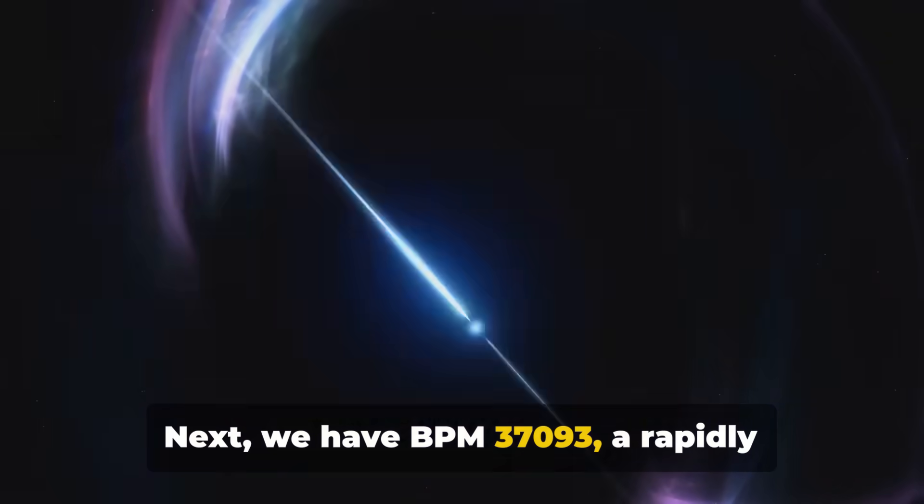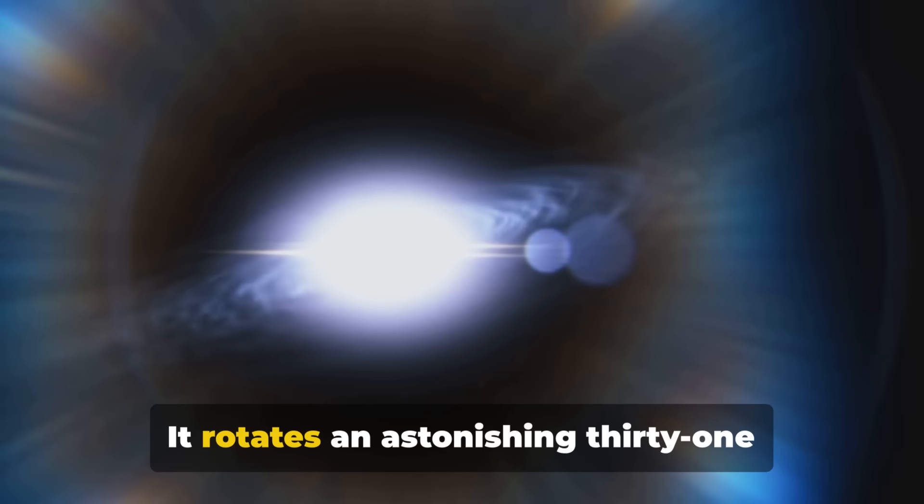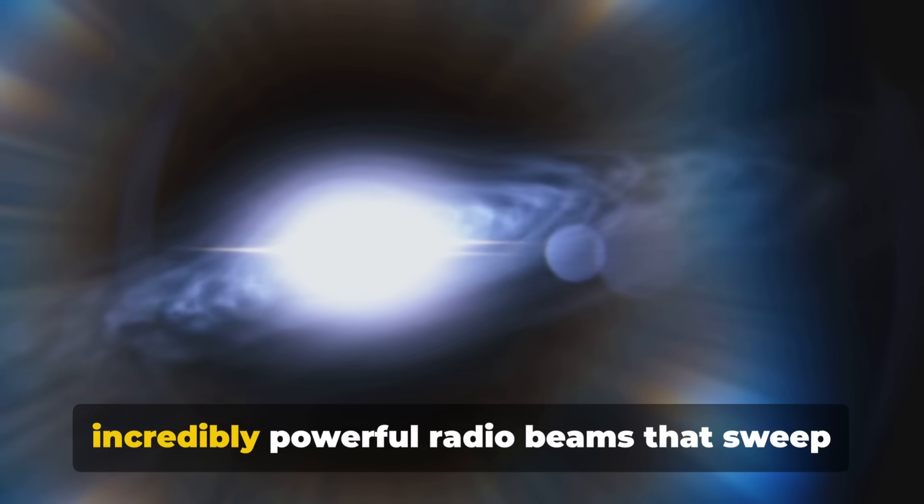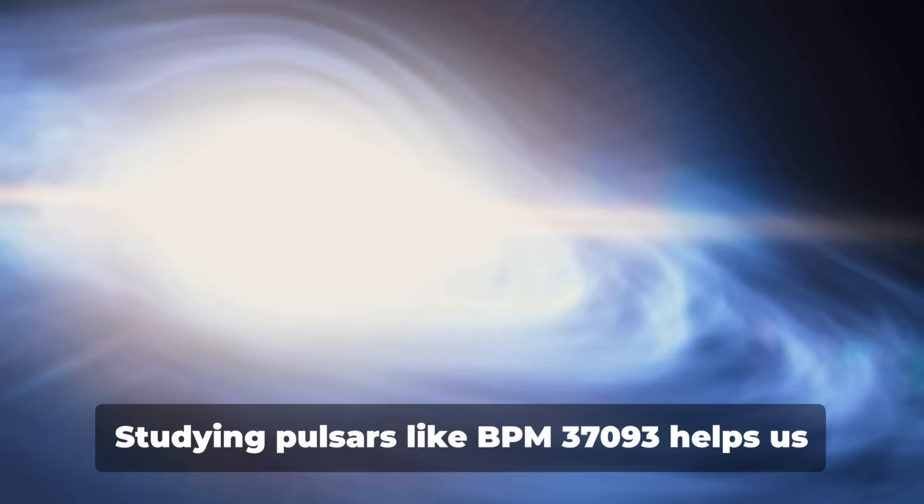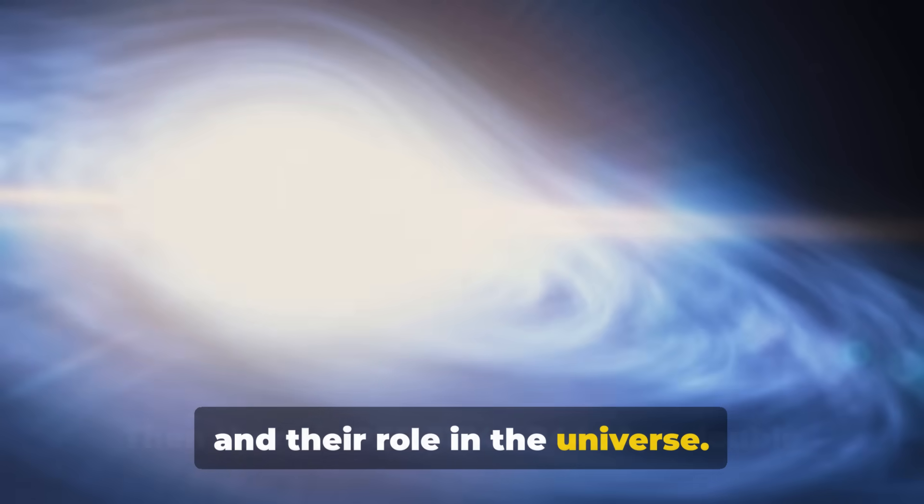Next, we have BPM 37093, a rapidly spinning pulsar. It rotates an astonishing 31,000 times per minute, creating incredibly powerful radio beams that sweep across the sky like a cosmic lighthouse. Studying pulsars like BPM 37093 helps us understand the physics of neutron stars and their role in the universe.